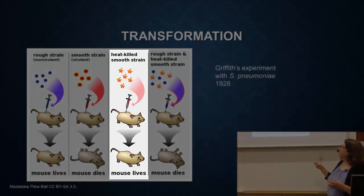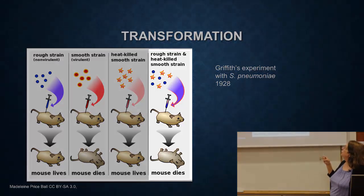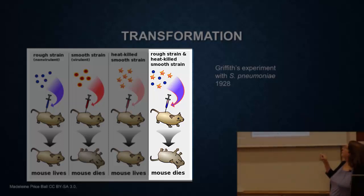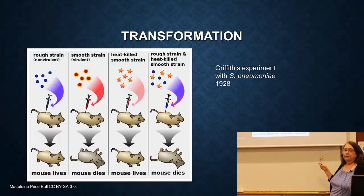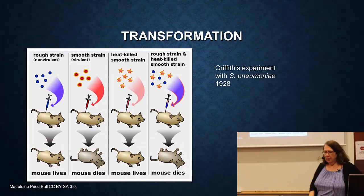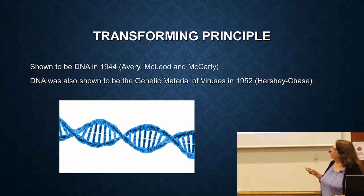If you take that smooth strain, heat it up, and inject it into a mouse, the mouse is fine — this is a heat-killed smooth strain. But the experiment he did was: he took a rough strain, where the mouse is fine, and the heat-killed smooth strain, and mixed them together. Both of these alone are harmless, but if you mix them together and put them in a mouse, the mouse dies. He called this transformation because the bacteria in this mouse were now smooth bacteria.